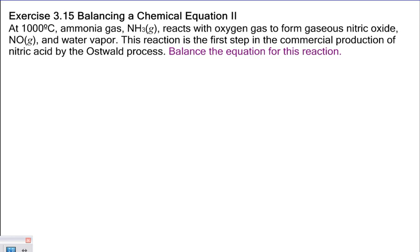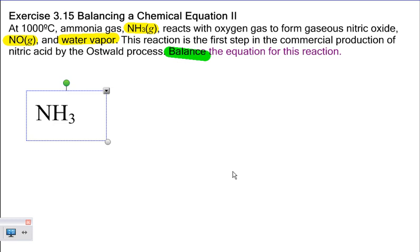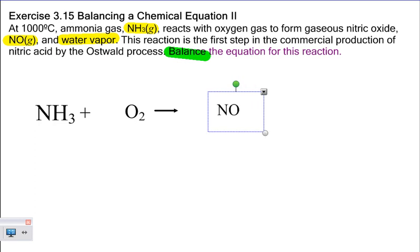Ammonium gas reacts with oxygen to form nitric oxide and water vapor. Once again, let's start by highlighting what we're given and what we're going to do. So, they were nice enough to give us the formulas for almost everything that's compound with the exception of water vapor, but I don't think anyone has trouble figuring that one out. And we're asked to balance this equation. So, first off, let's just get down everything we've got. We've got ammonium plus oxygen producing nitric oxide and water. So, now I have my unbalanced equation.